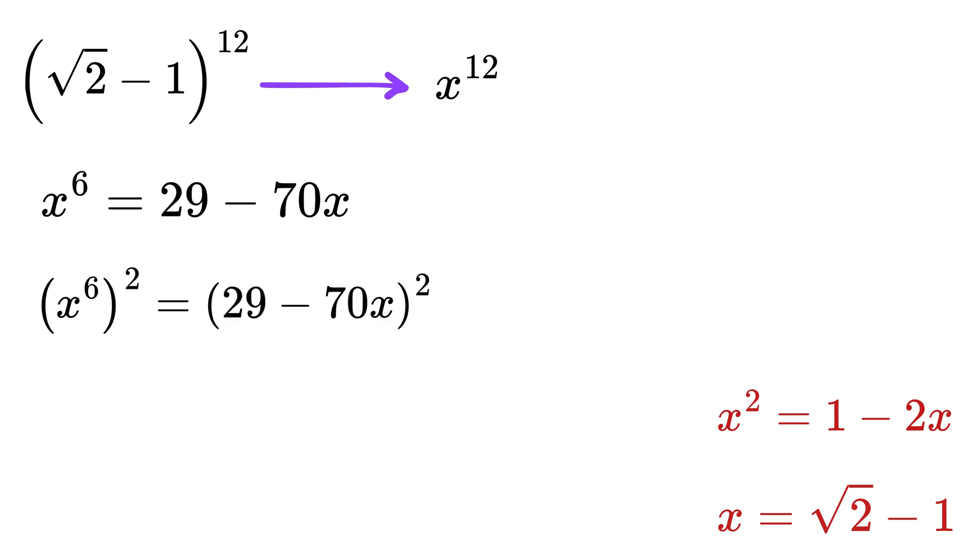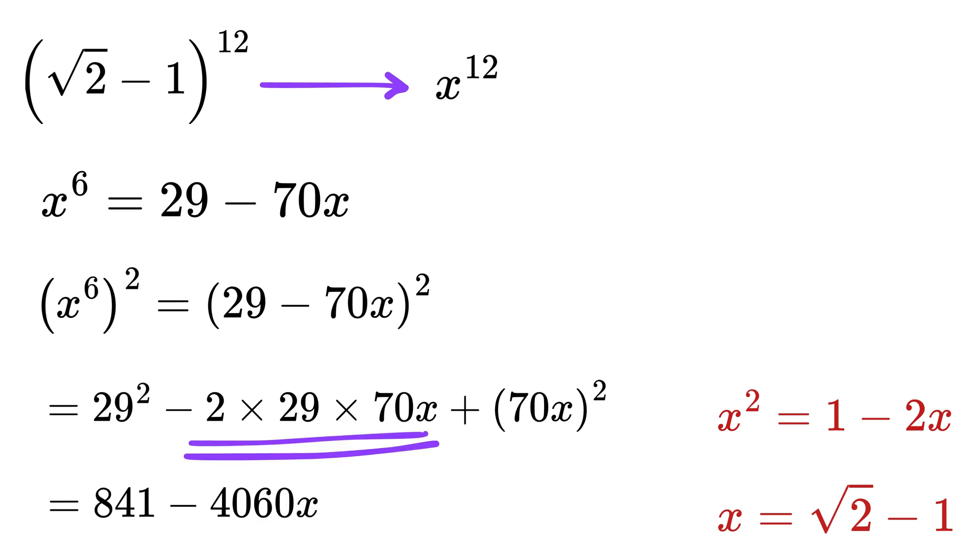Finally, in order to get x^12, we will square this x^6. We get (29 - 70x)^2 = 29^2 - 2(29)(70x) + (70x)^2, so it will be 841 - 4060x + 4900x^2.